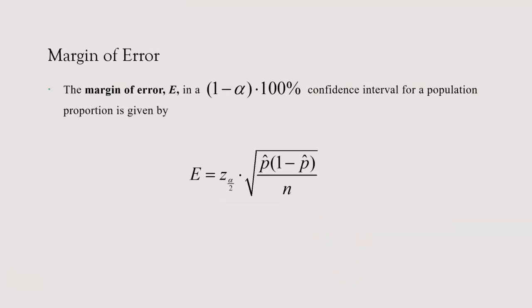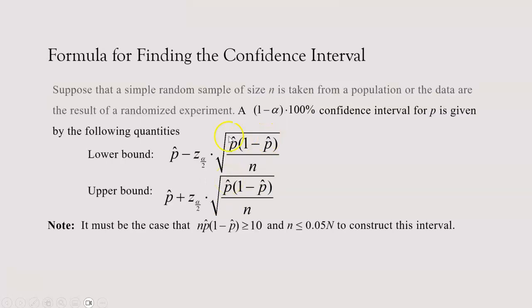Let's also look at the margin of error. This is how you calculate the margin of error for a (1 minus alpha) times 100% confidence interval for a population proportion. Your margin of error E is equal to your critical value times the standard deviation of your sample proportion — this is the part that you're adding and subtracting to your sample proportion.